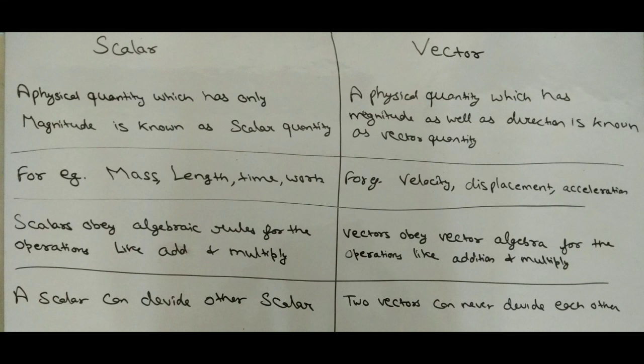The examples of scalar quantity are mass, length, time, work, etc. The examples of vector quantity are velocity, displacement, acceleration, etc.